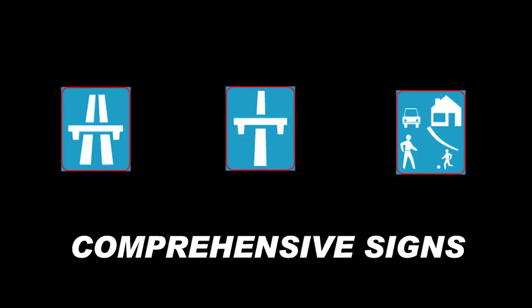Comprehensive signs advise that you are about to enter a road or area governed by a comprehensive set of rules that must be obeyed. They are rectangular in shape on a blue background with a red border.